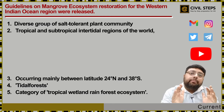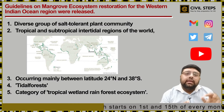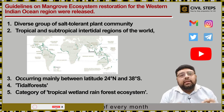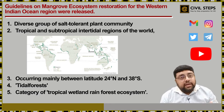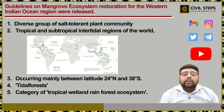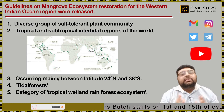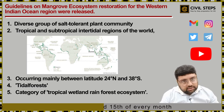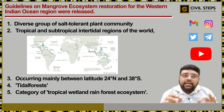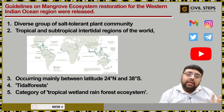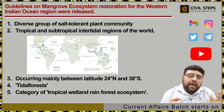Mangroves are a diverse group of salt-tolerant plant communities of tropical and subtropical intertidal regions of the world, occurring mainly between 24 degrees north and 38 degrees south latitude. They are also referred to as tidal forests and belong to the category of tropical wetland rainforest ecosystems. These mangrove forests exhibit varied morphological and physiological evolutionary adaptations to survive limiting factors like lack of oxygen, high salinity, and tidal inundation, such as succulent leaves, sunken stomata, aerial breathing roots called pneumatophores, vivipary, and stilt roots.